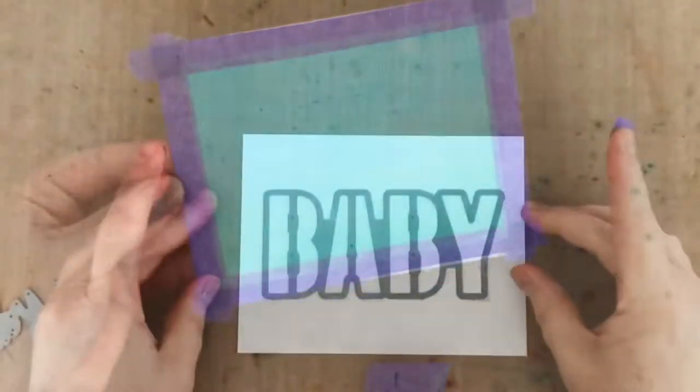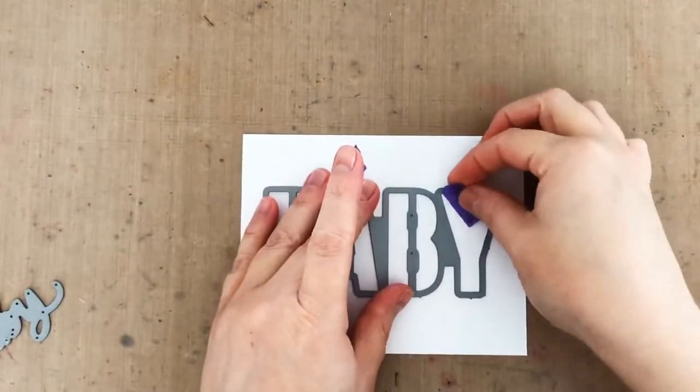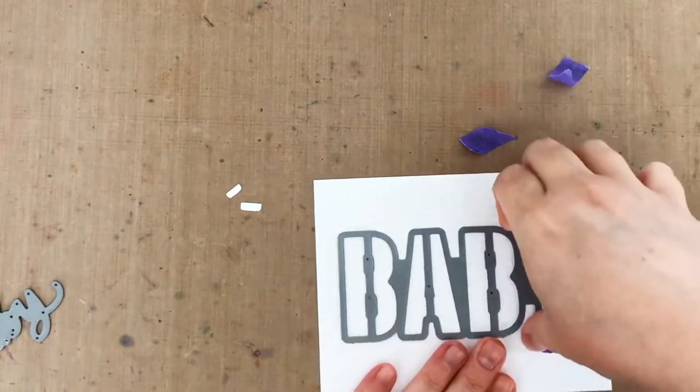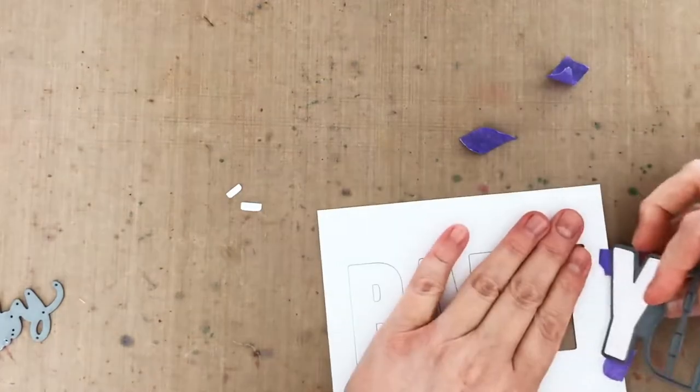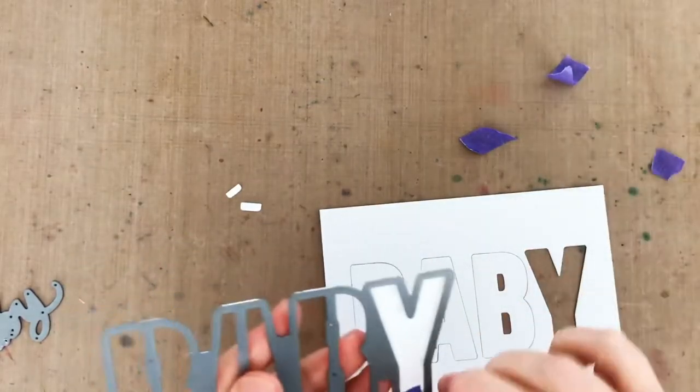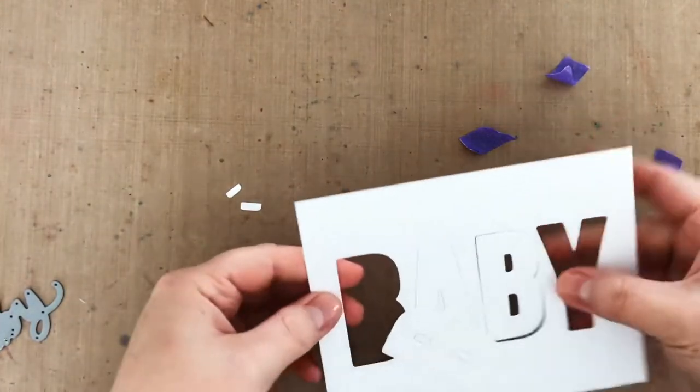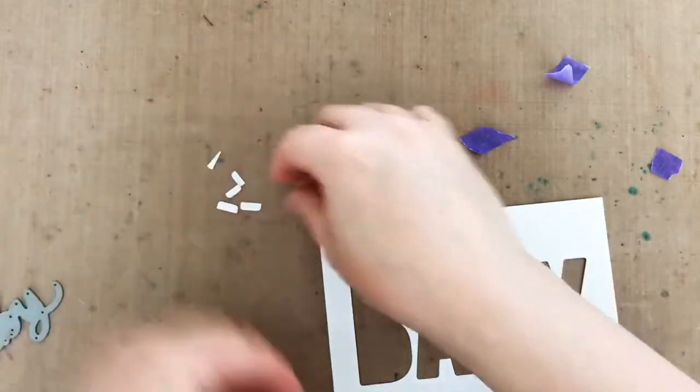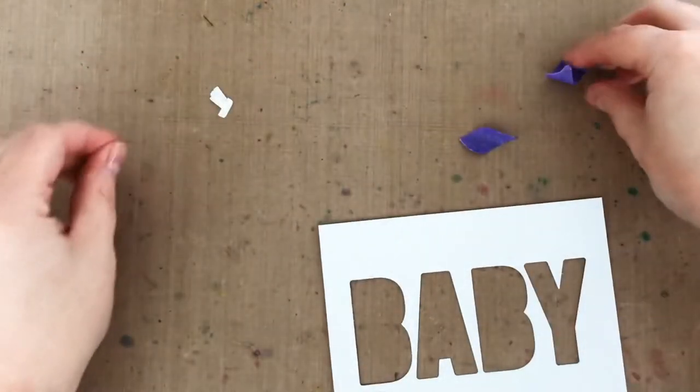Now I have my card front and shaker window to work on. I'm using the Pretty Pink Posh Baby die cut to make my window. I secure it with a little purple tape and run it through my die cut machine. When I remove the die I can save the letters for another project, but I do want to save the little letter insides for this card. So I just pull them out and then use a little piece of purple tape to stick them to my mat so they don't get lost.